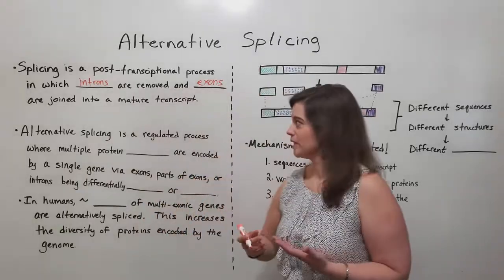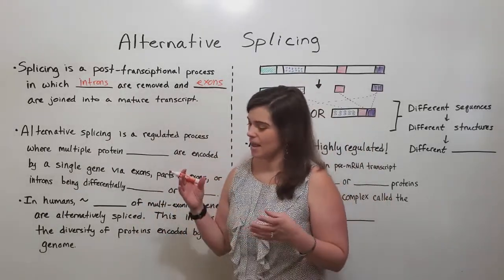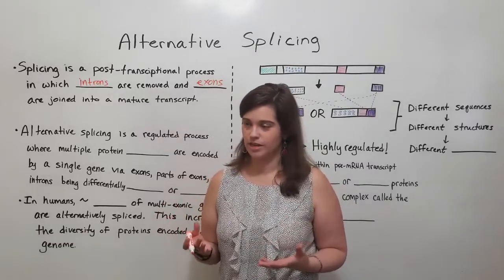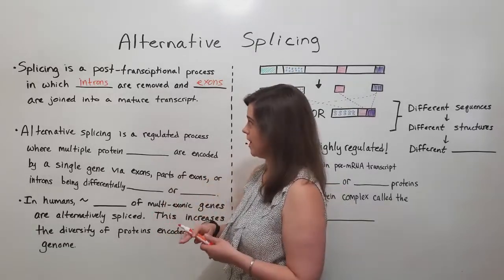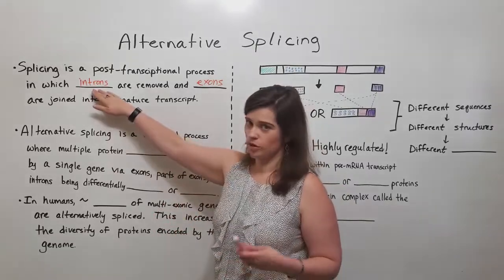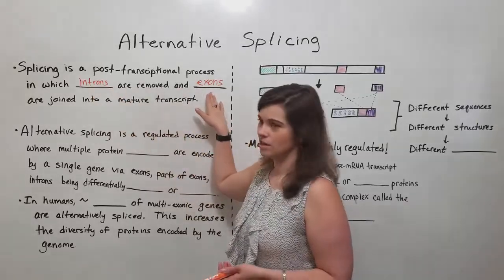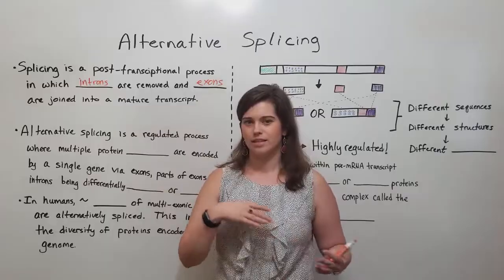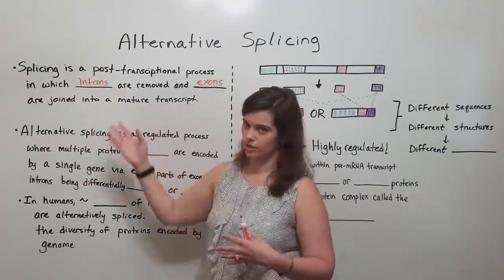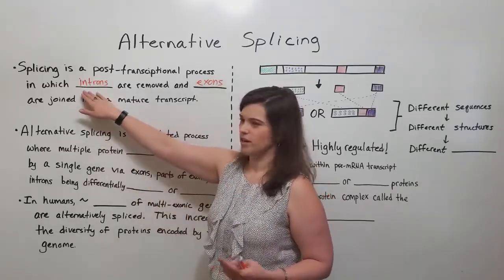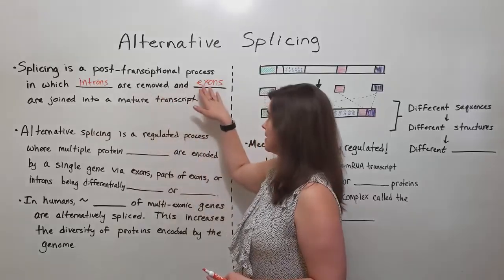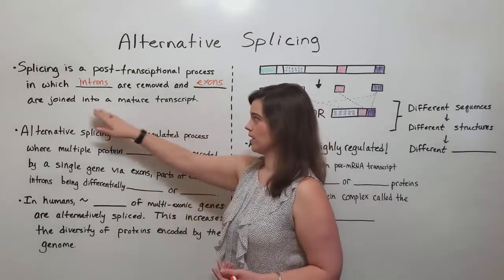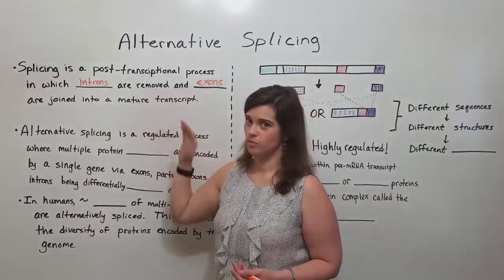What does this mean? In a pre-mRNA transcript made during transcription in the eukaryotic cell, there are introns which are non-coding regions and exons which are coding regions — the introns get spliced out. This can confuse students because of 'in' versus 'out,' but 'in' stands for intervening sequence, and the 'ex' in exon stands for expressed sequence, so it's the exons that are joined together into the mature transcript.